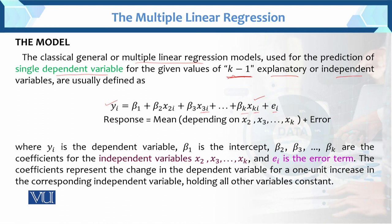In this model: yi is the dependent (response) variable; β1, β2, β3, ..., βk are the constants or regression coefficients; x2, x3, ..., xk are the independent variables; and ei is the error term. Here β1 is the intercept, and β2 through βk are the coefficients of the corresponding independent variables. Together, these form the regression model.